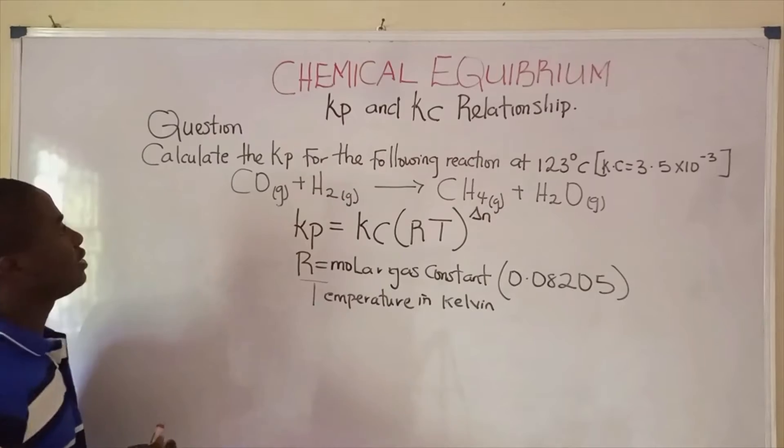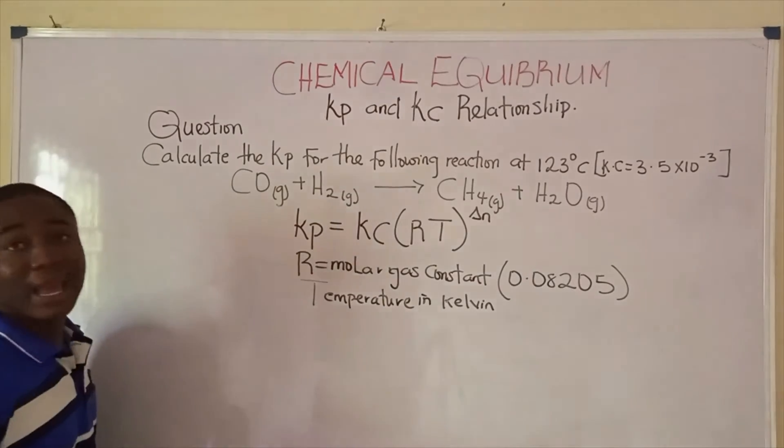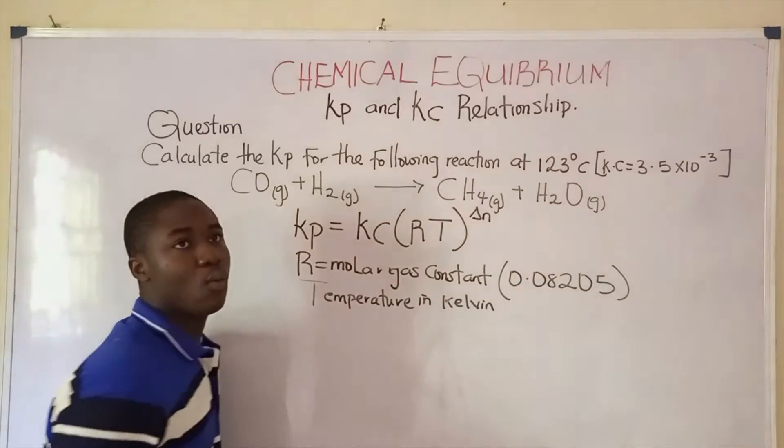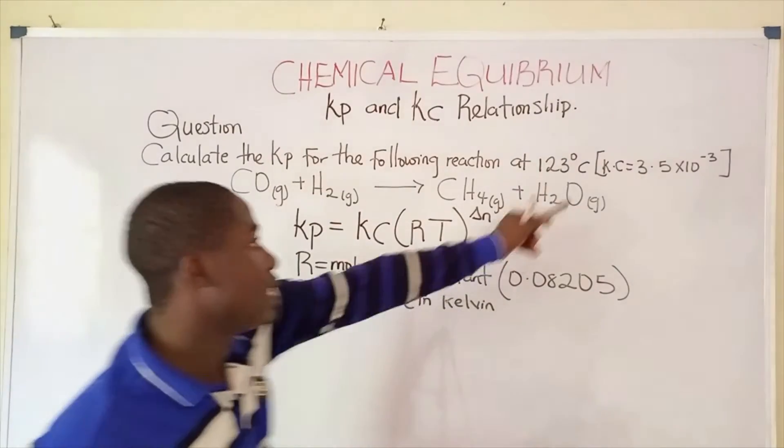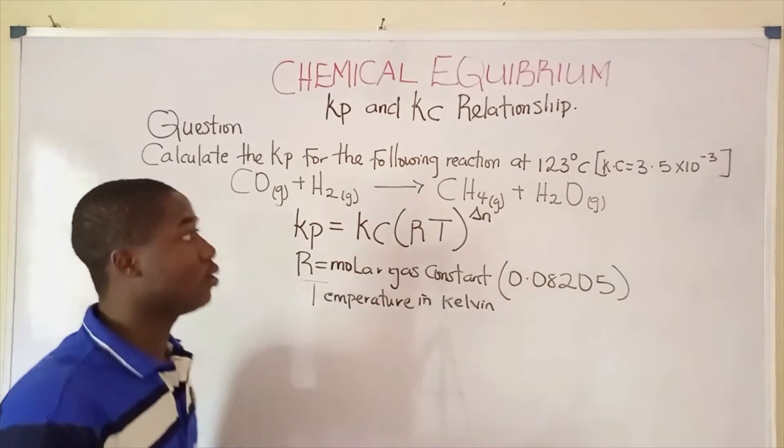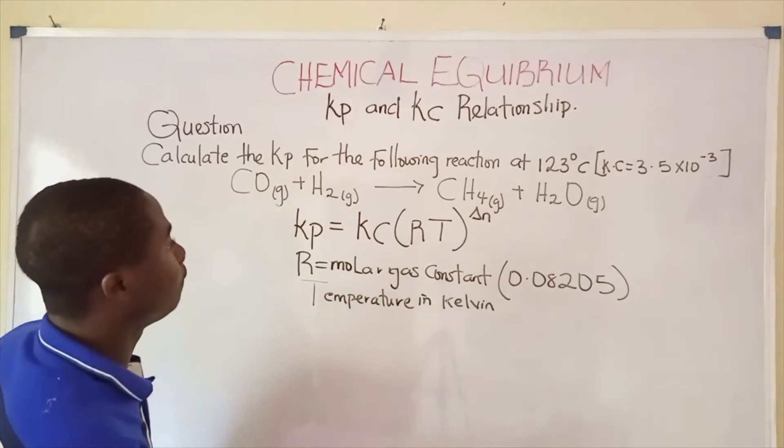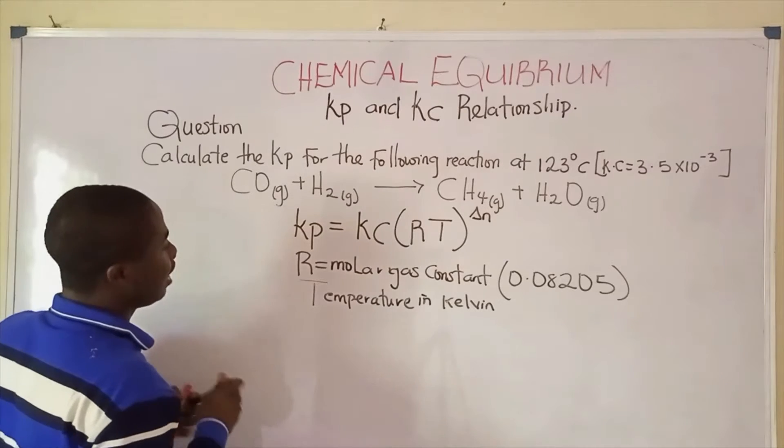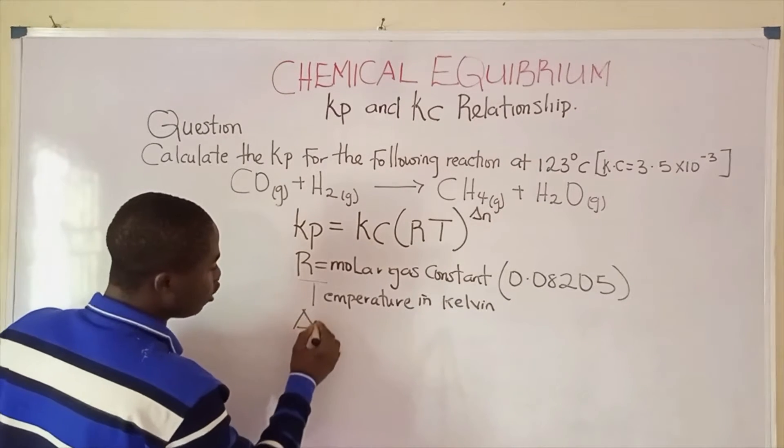In this question, it says calculate the Kp for the reaction at 123 degrees Celsius, given the Kc which is the equilibrium constant written in terms of concentration. How do we get the change in number of moles?